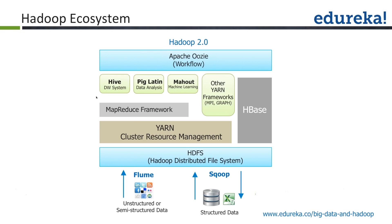Now let's look at the overall Hadoop ecosystem and how tools work in tandem. For data movement, there are two main approaches. If you have unstructured, semi-structured, or streaming data, there is a tool called Flume, which is used to move streaming data. The other tool is called Sqoop — short for SQL to Hadoop — which moves data from structured databases such as MySQL, Oracle, or Excel into the Hadoop Distributed File System using available connectors.